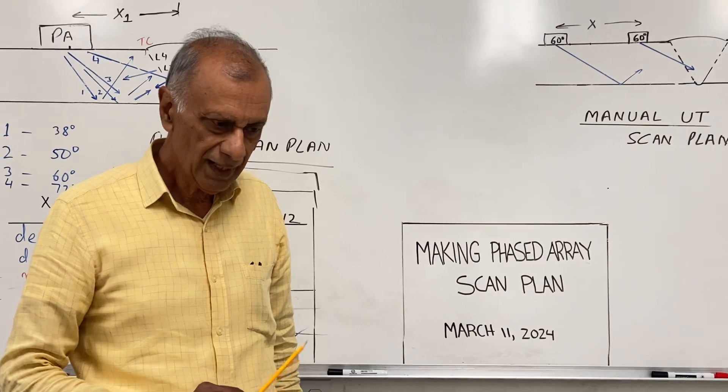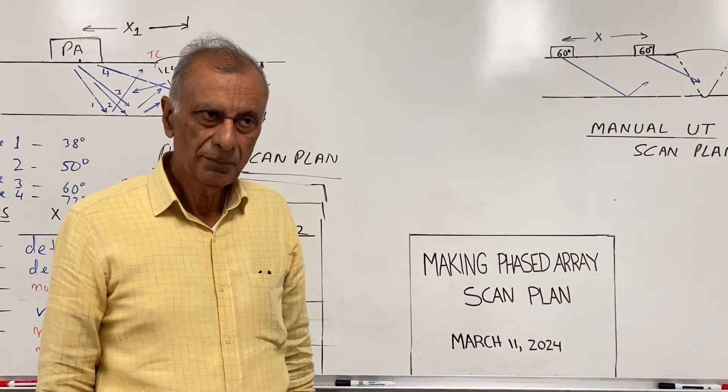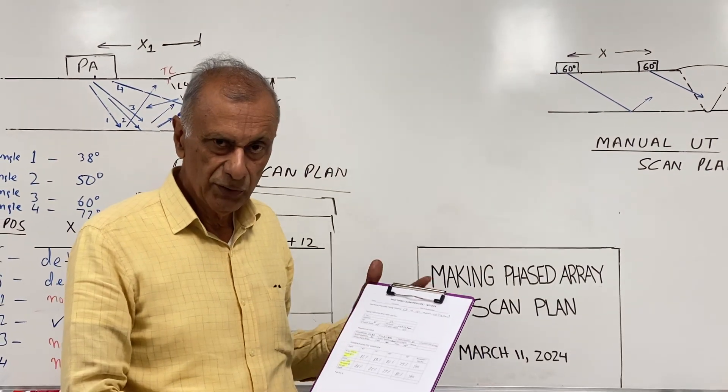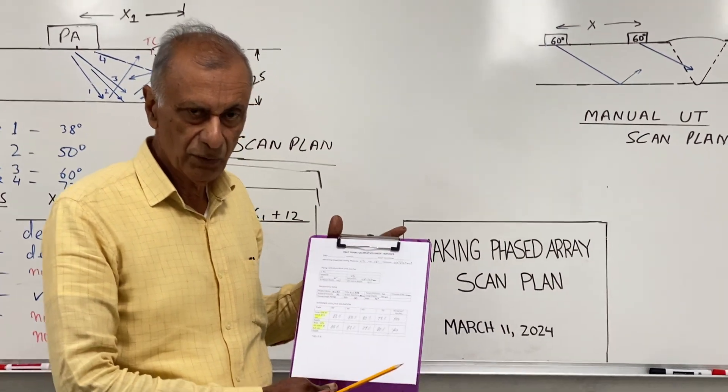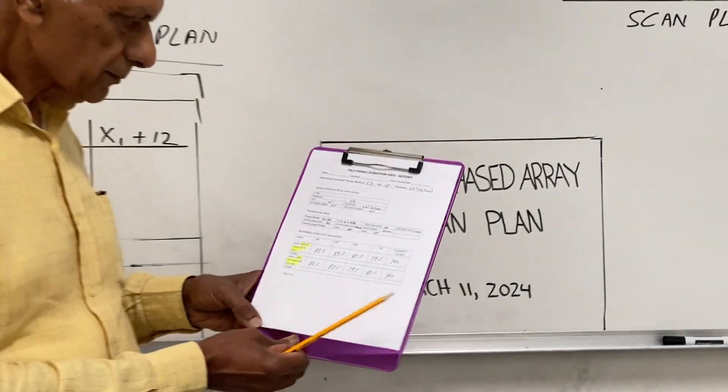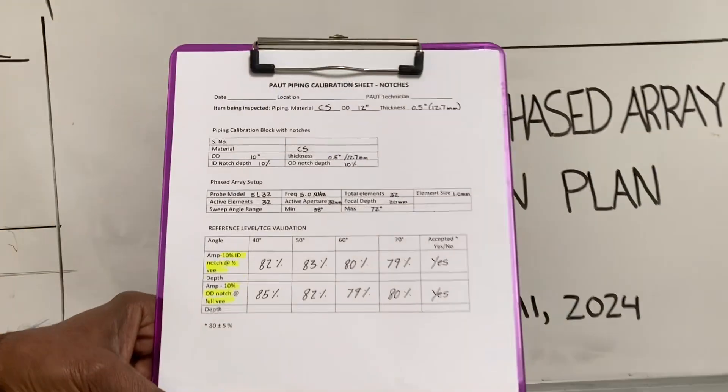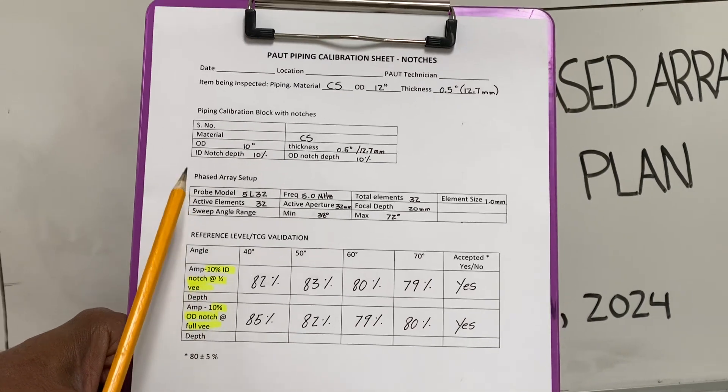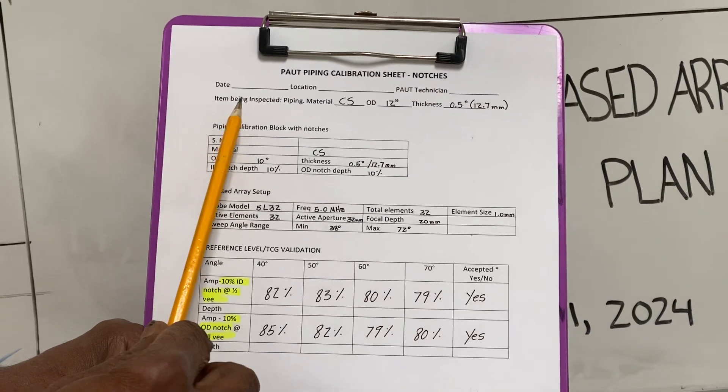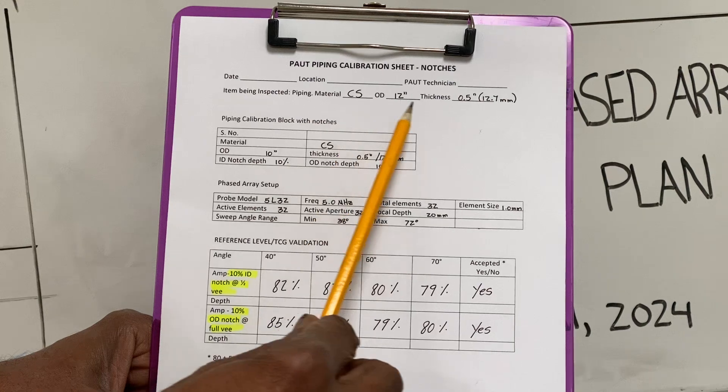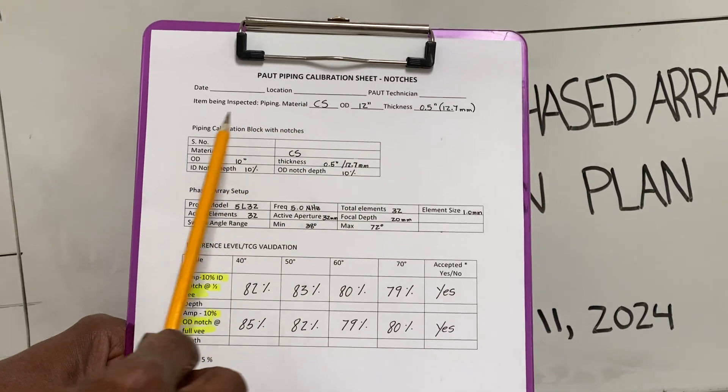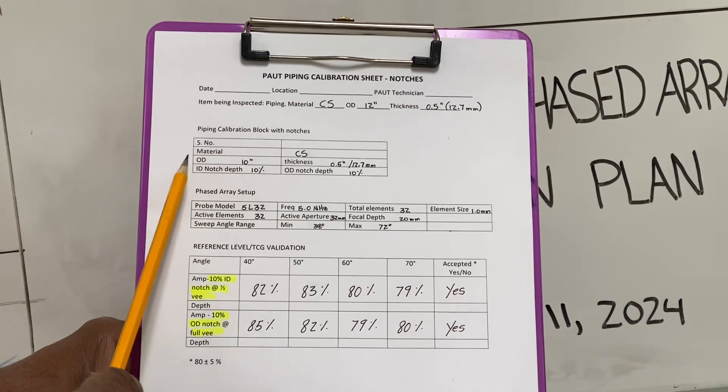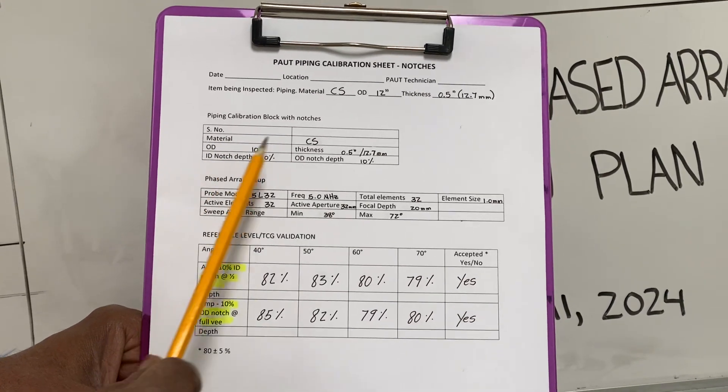Last time we covered PAUT calibration and I wanted to show you the PAUT calibration sheet and what it looks like. This is a PAUT calibration sheet and on this one, what we have is the pipe which has to be inspected, which is a 12 inch. The PAUT calibration block or the calibration pipe with the notches.